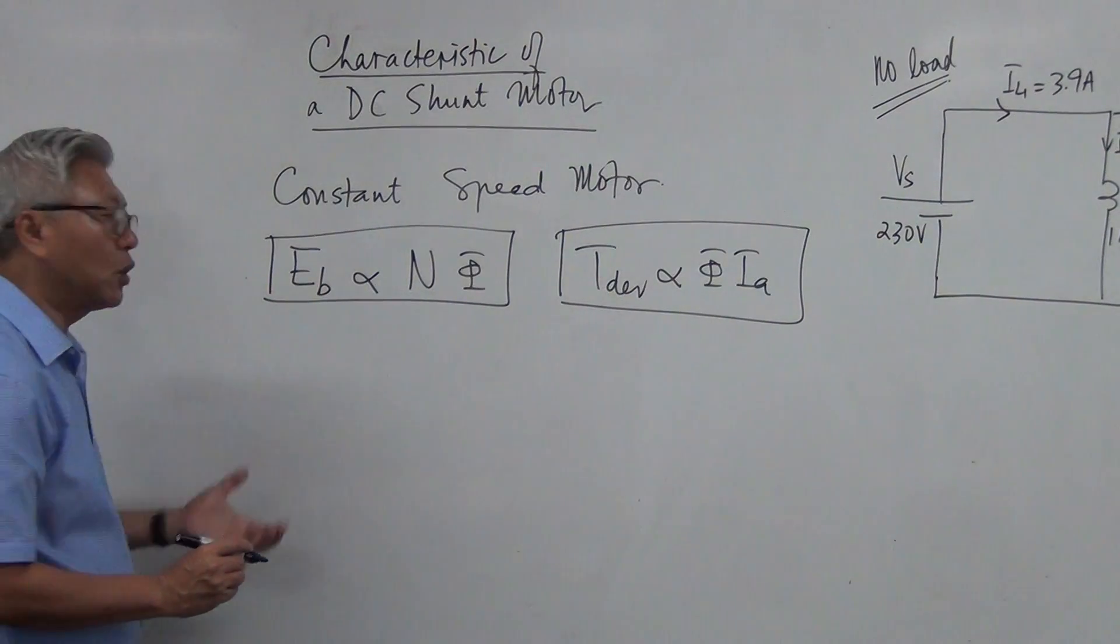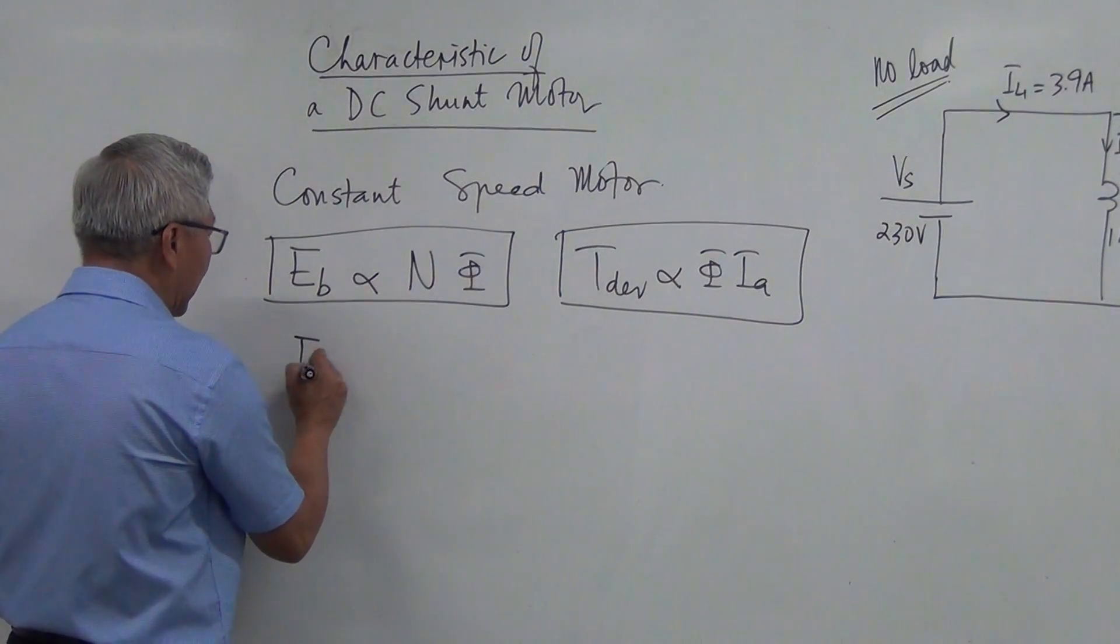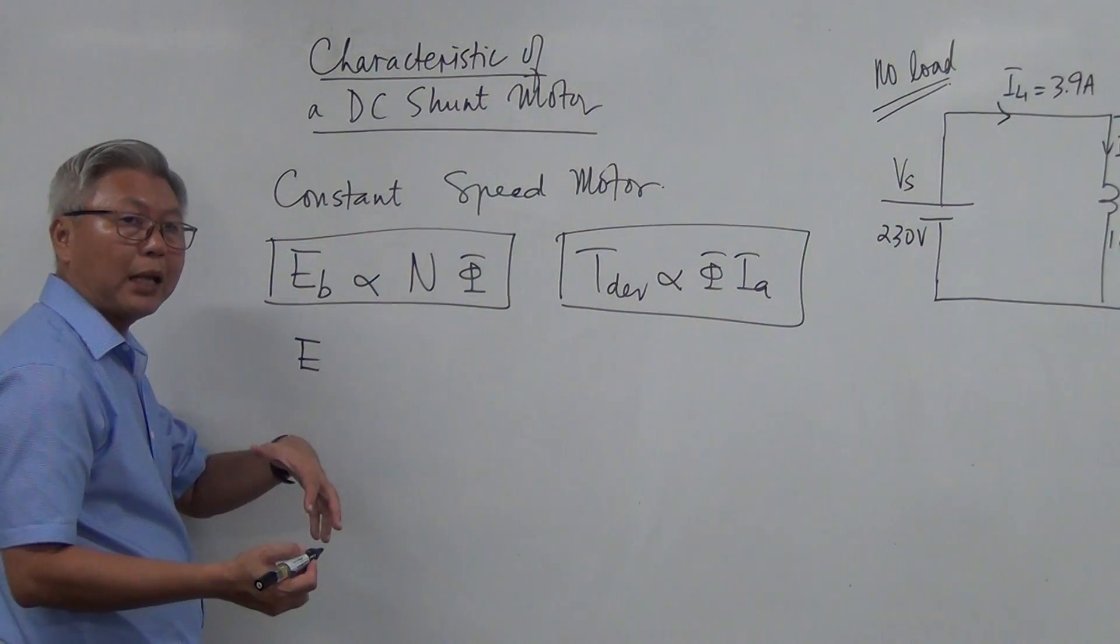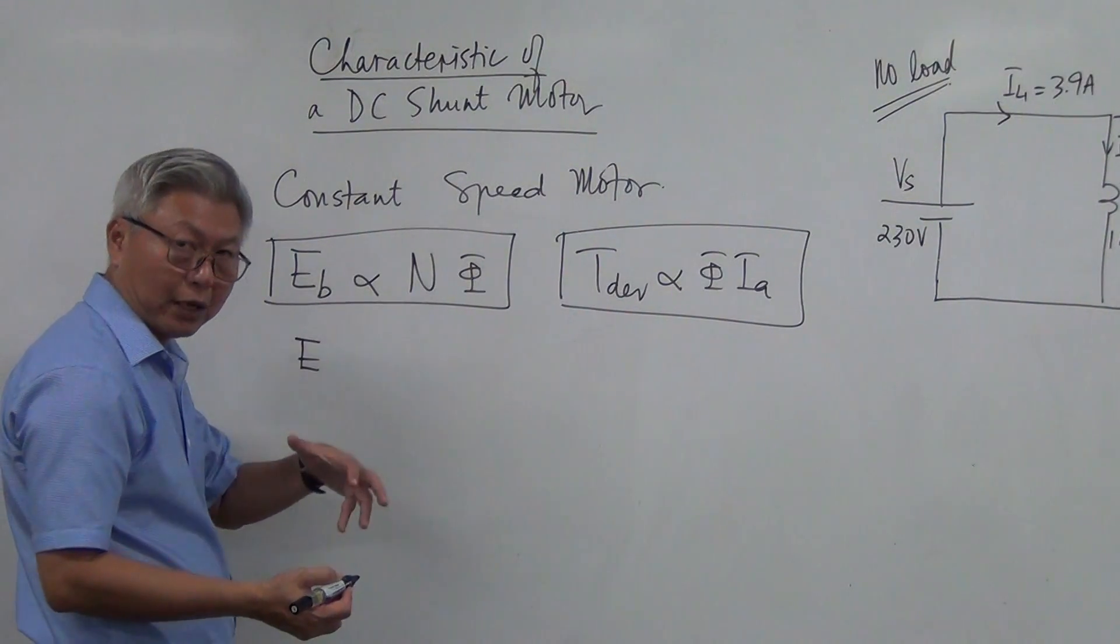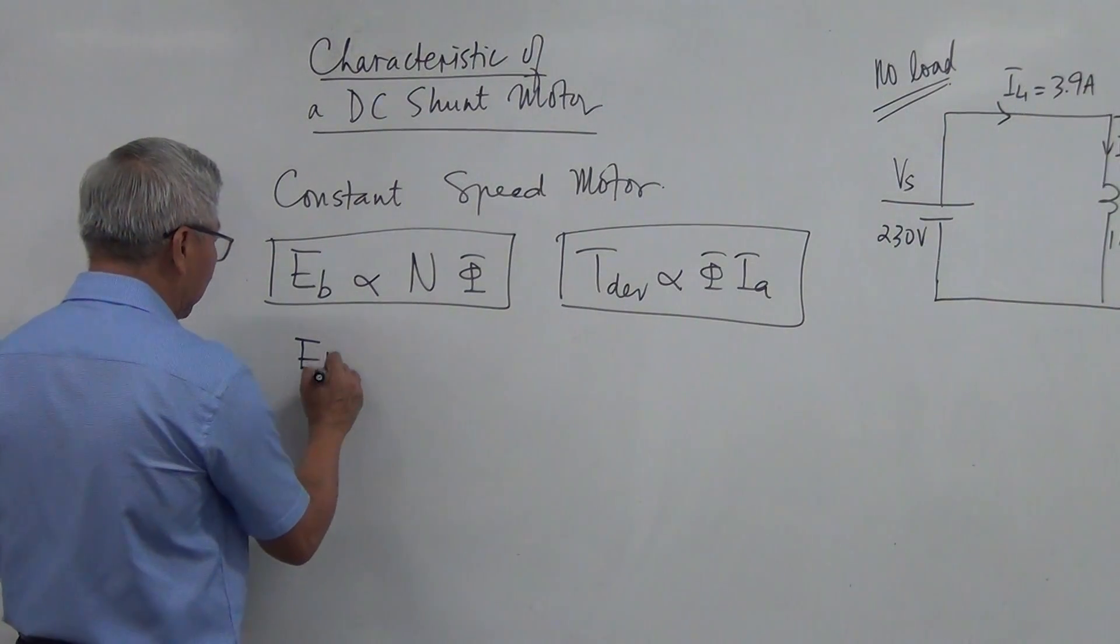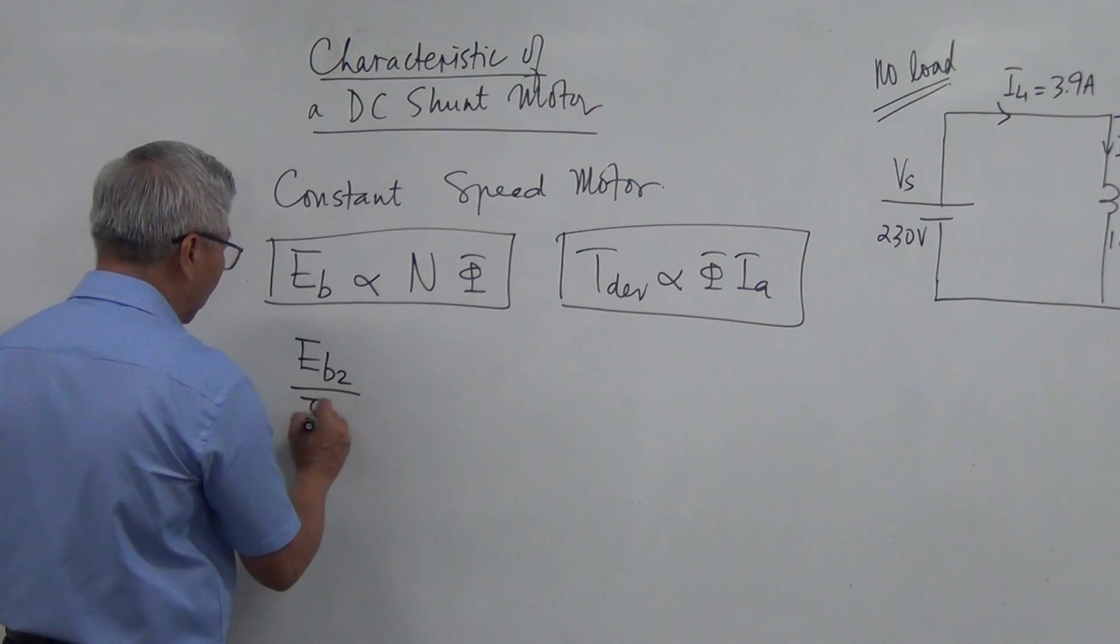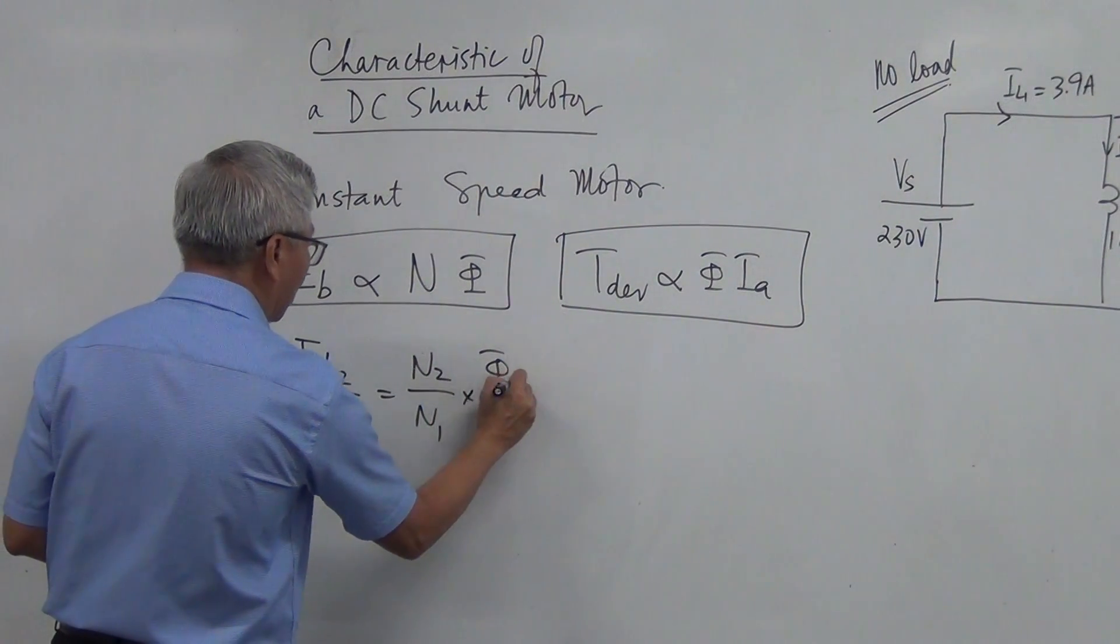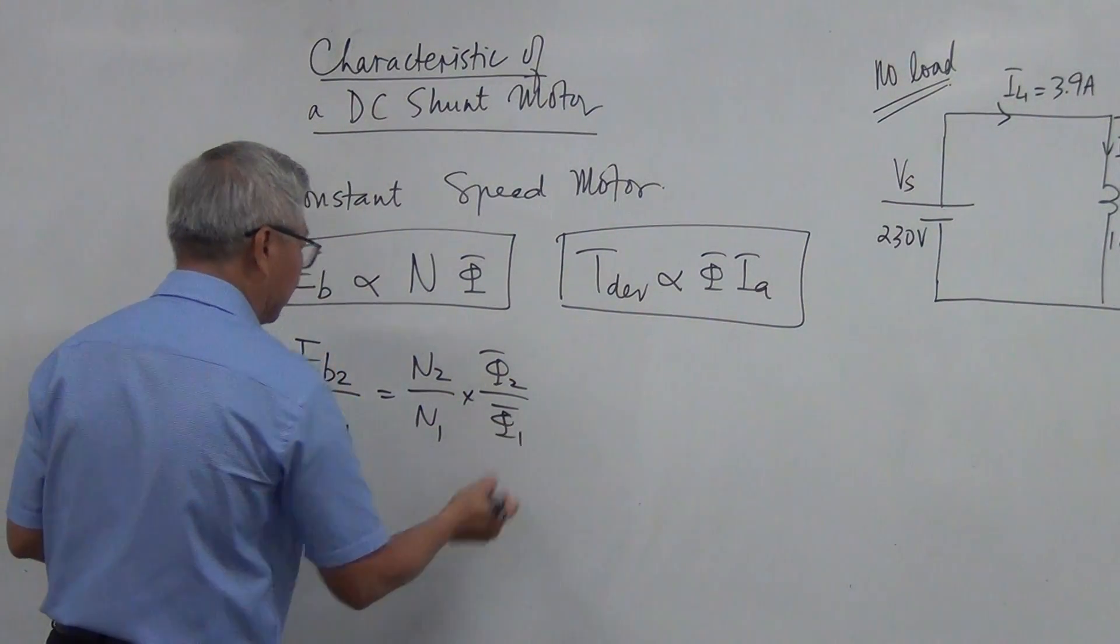So Eb is proportional to n times flux. It's just like our EG, remember in a separately excited generator, we talk about EG2 over EG1 equal to N2 over N1, flux 2 over flux 1.